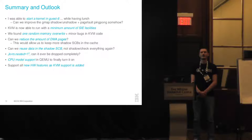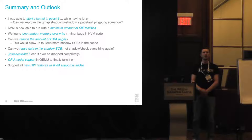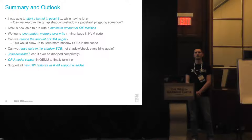Audience question about page table depth: s390x has up to five levels — three regions, one segment, and one page table — but most of the time you only use three levels because it's variable and doesn't have to be five. The maximum is five. Thank you.